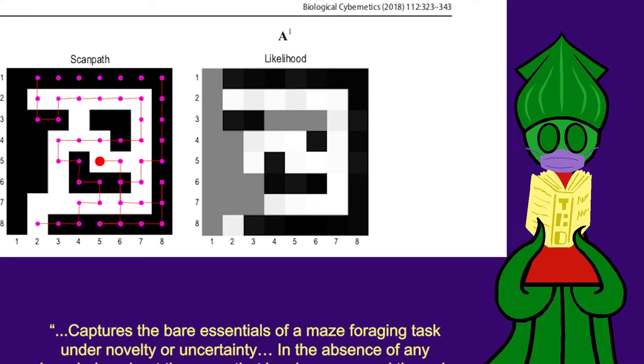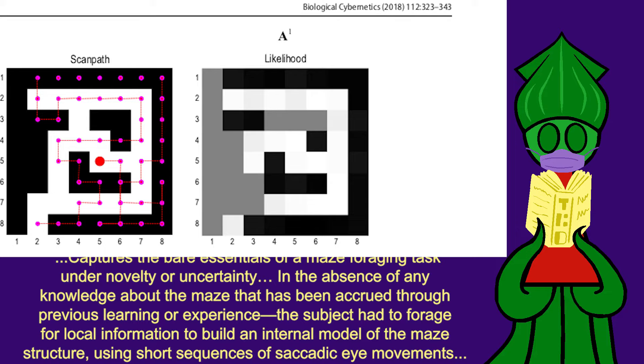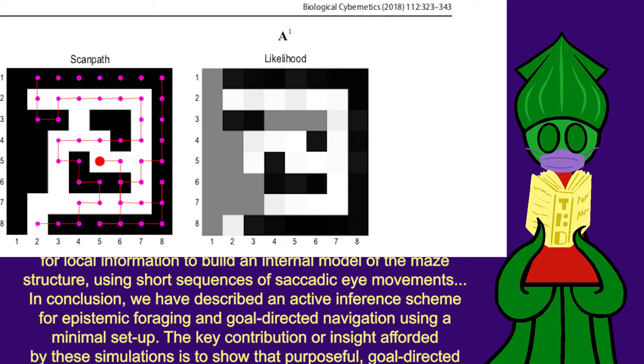In the absence of any knowledge about the maze that has been accrued through previous learning or experience, the subject had to forage for local information to build an internal model of the maze structure, using short sequences of saccadic eye movements. In conclusion, we have described an active inference scheme for epistemic foraging and goal-directed navigation, using a minimal setup.